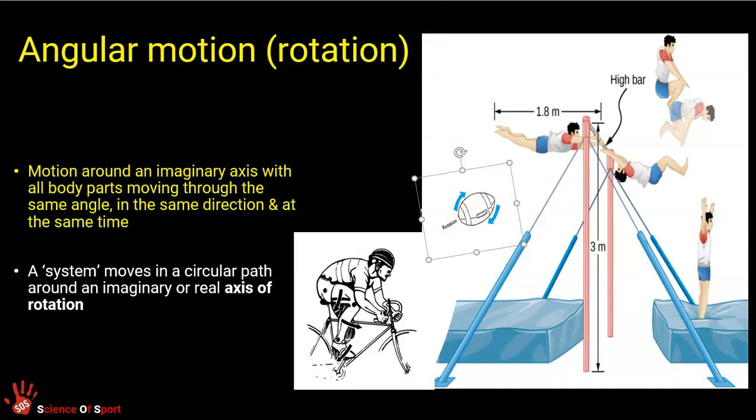This rugby ball is rotating around an imaginary axis. If I put a skewer through the length of the ball, the ball is spinning and rotating around that imaginary axis. The cyclist, if you look at their limbs, their knees and their hip are involved in angular motion. If I put a skewer through their hip or through their knee sideways, there would be movement of the limbs around that axis, that imaginary axis. Circular path motion, rotation, is angular motion.